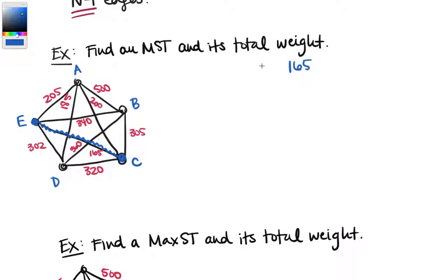We want edge CE with weight 165. Now out of the remaining edges, the cheapest one that doesn't create a circuit is edge AD with weight 185. You might notice these edges don't connect up — they cross but don't connect at vertices. That doesn't matter; we'll end up with something that connects up as a spanning tree.